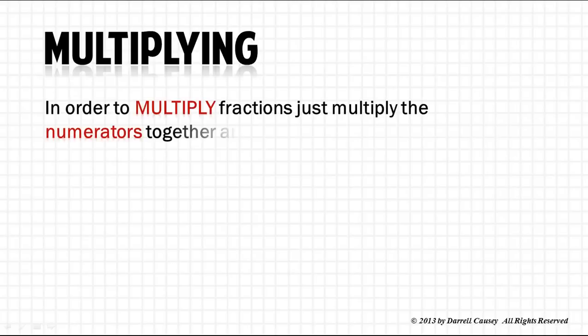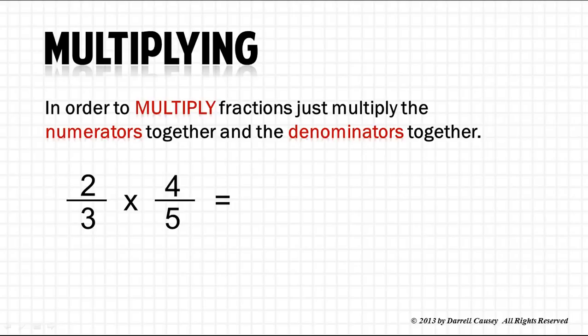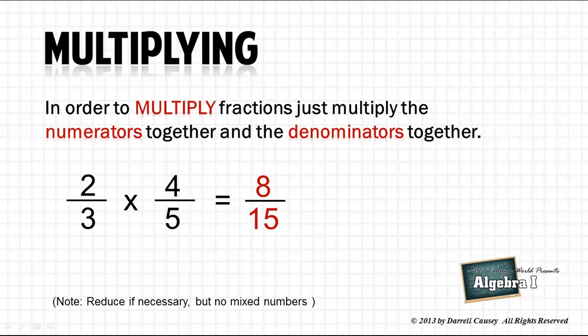Multiplying. In order to multiply fractions, you must multiply the numerators together and the denominators together. Pretty straightforward. So, two times four is eight, and three times five is fifteen. We get eight-fifteenths. We need to reduce it, but we don't care to have mixed numbers. And since eight and fifteen cannot be reduced, we're good.